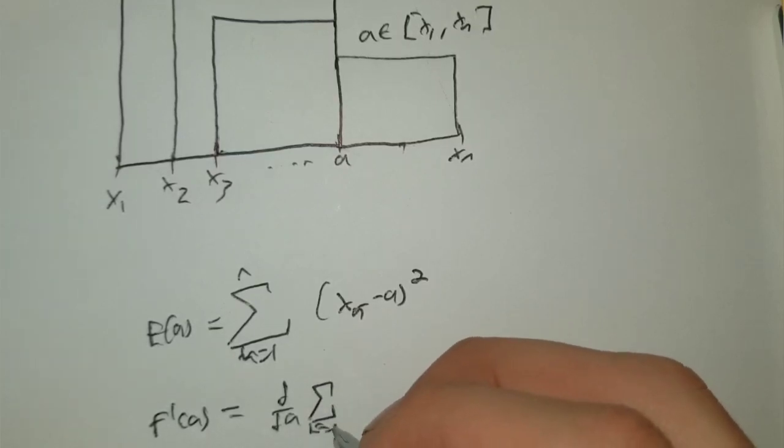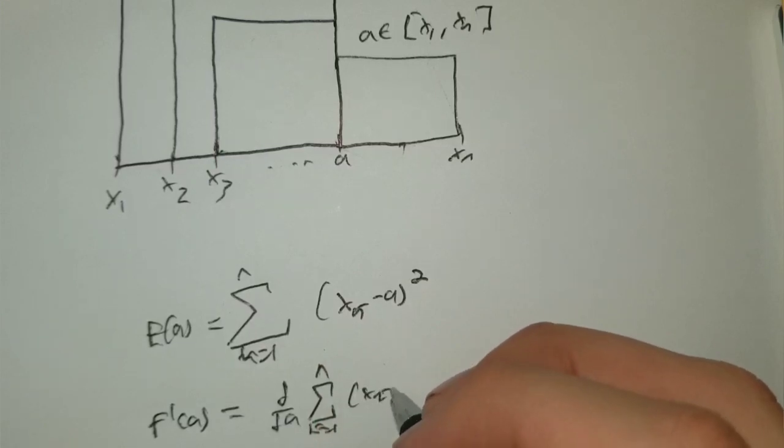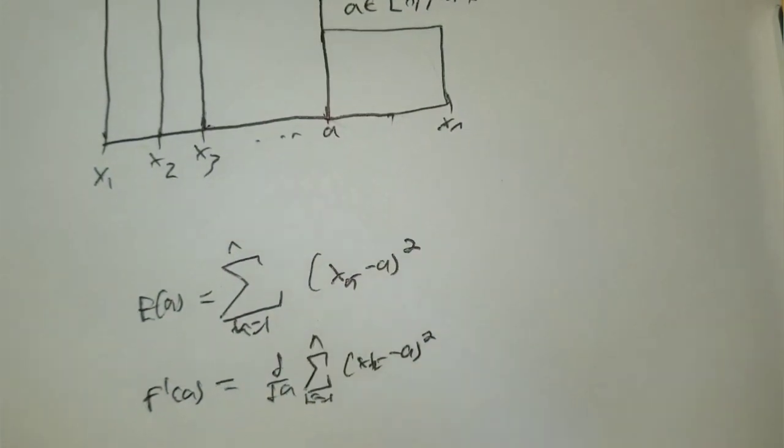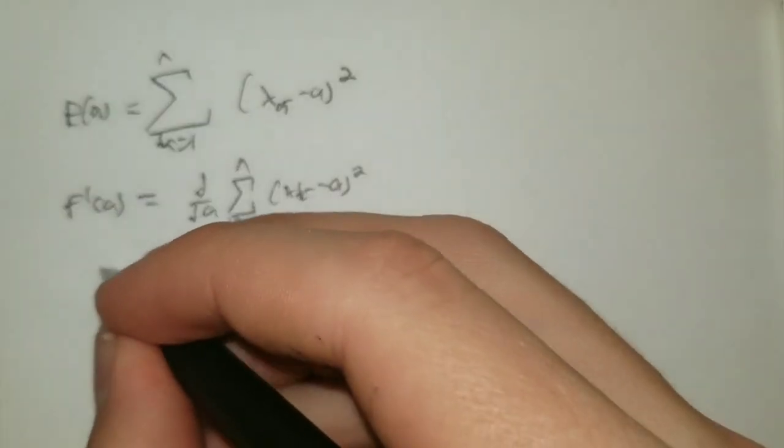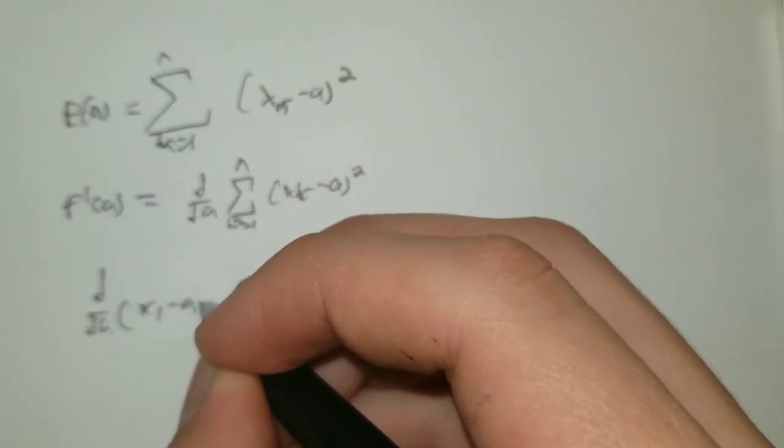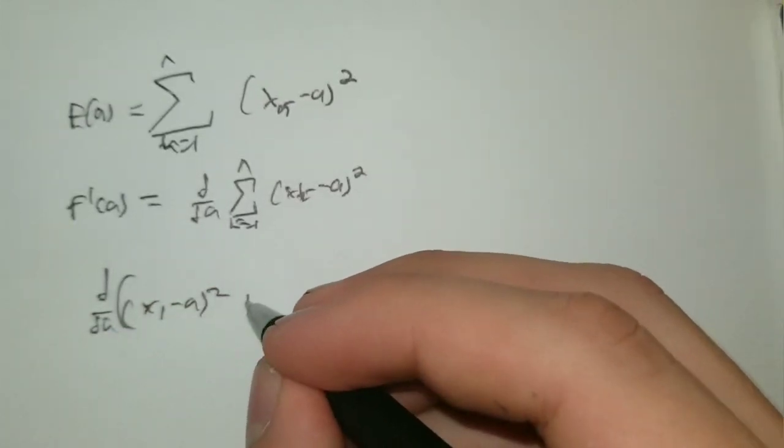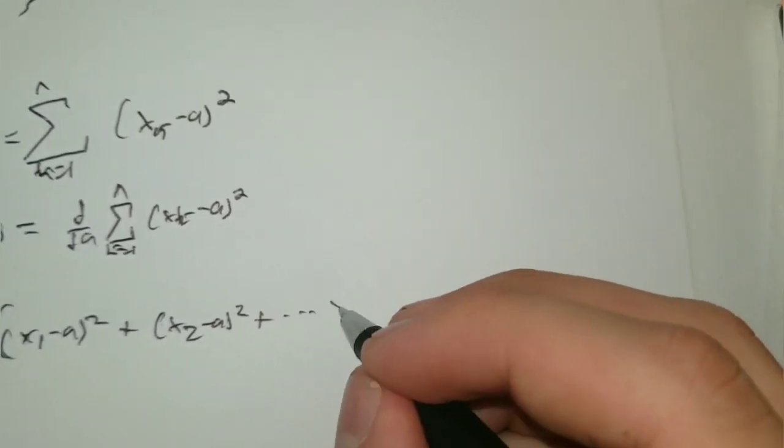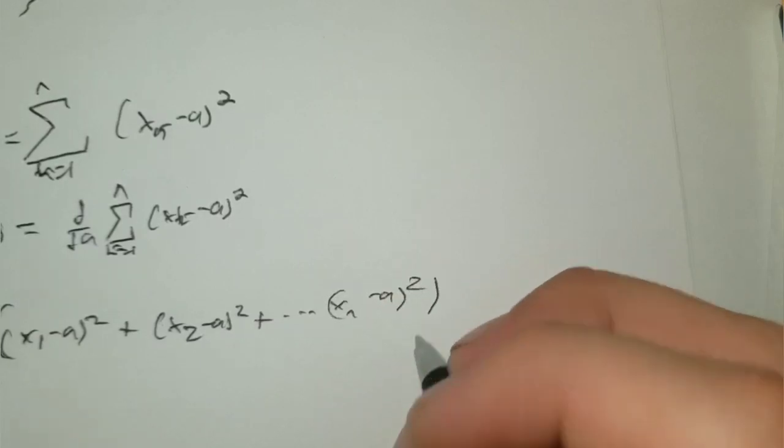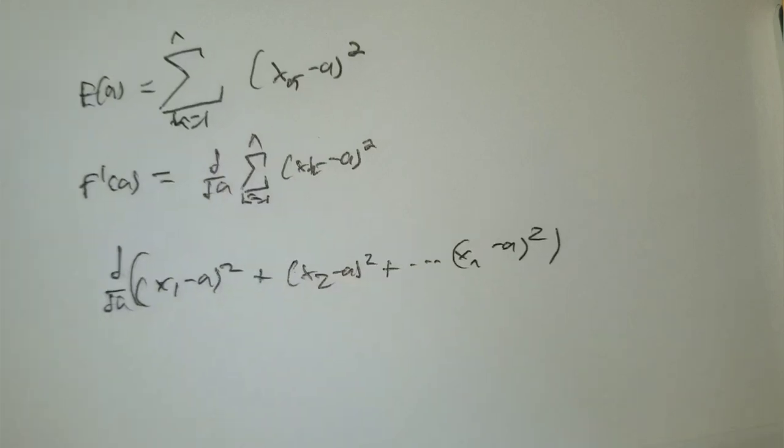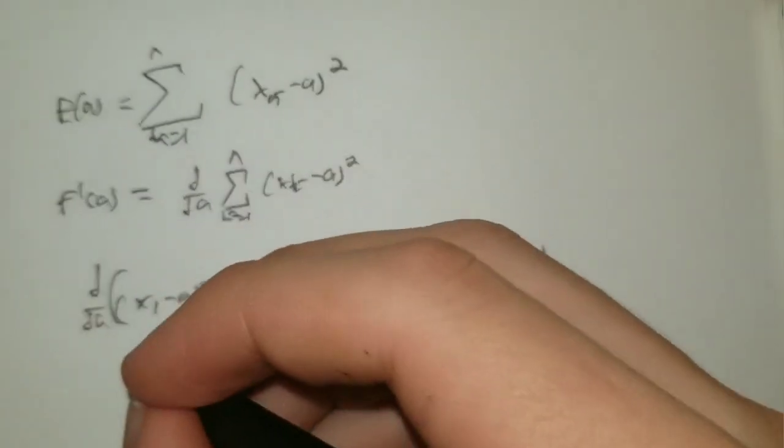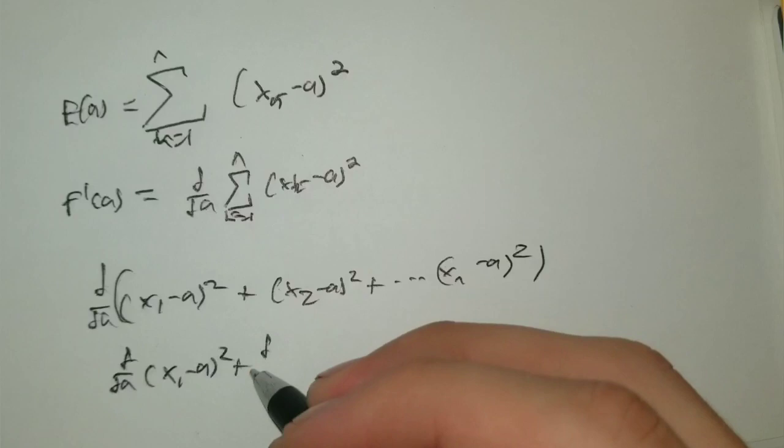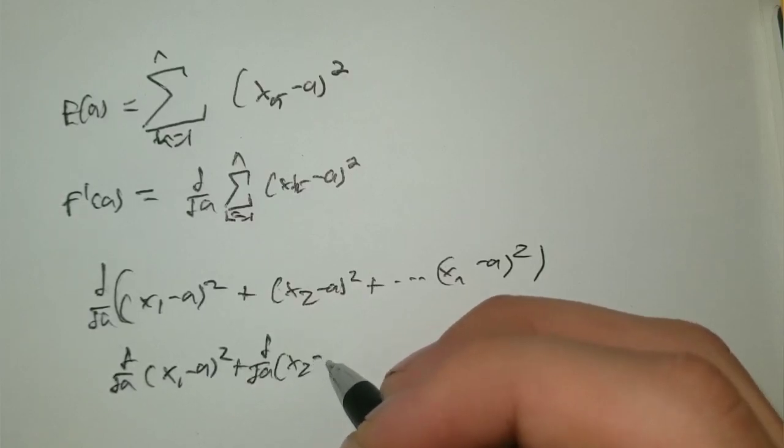Now how shall we go about with taking the derivative of this function? It's not your average function, it's a series, which we can write as the derivative of x1 minus a squared plus x2 minus a squared plus all the way to xn minus a squared. We have to take the derivative of this. Using sum rule, we know that this is nothing but d/da the derivative of x1 minus a squared plus d/da of x2 minus a squared all the way up to